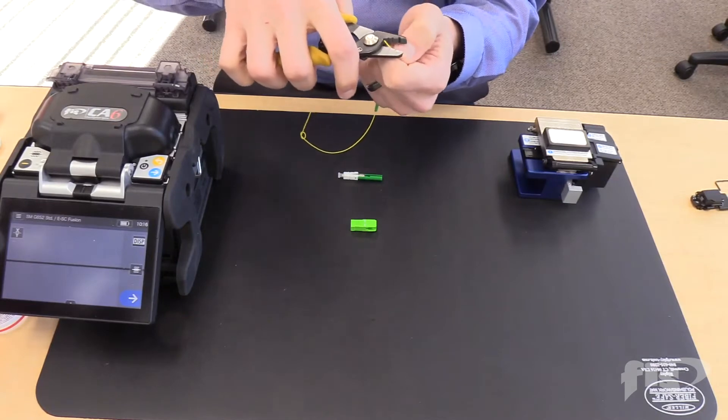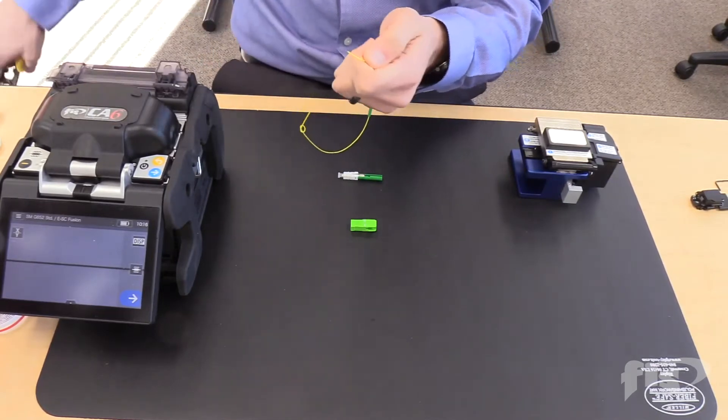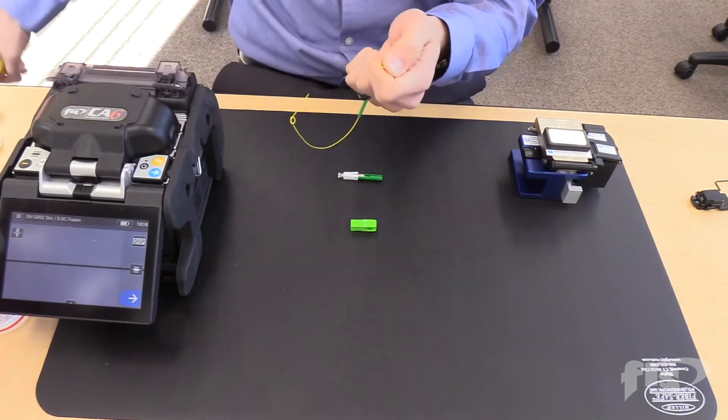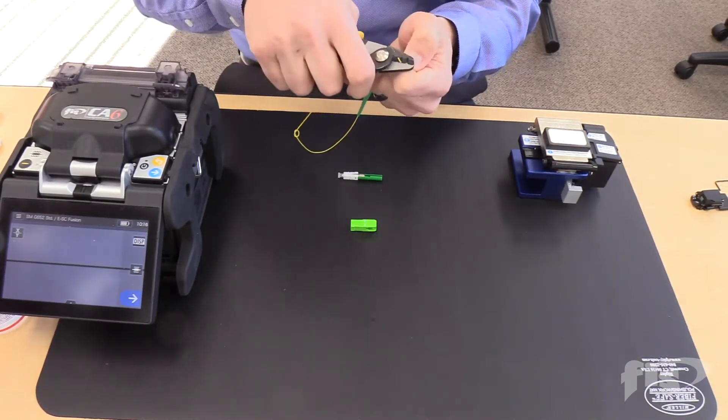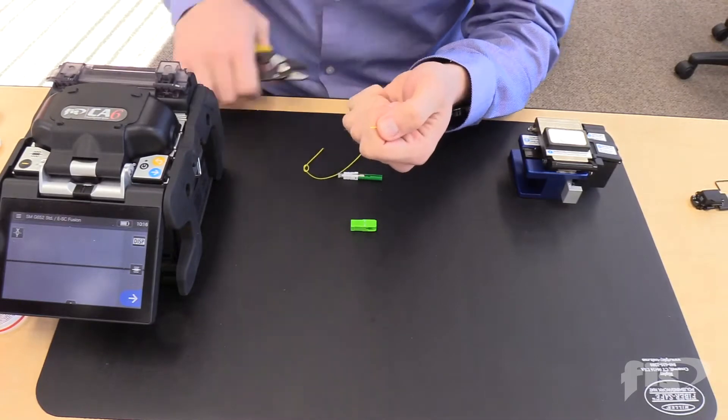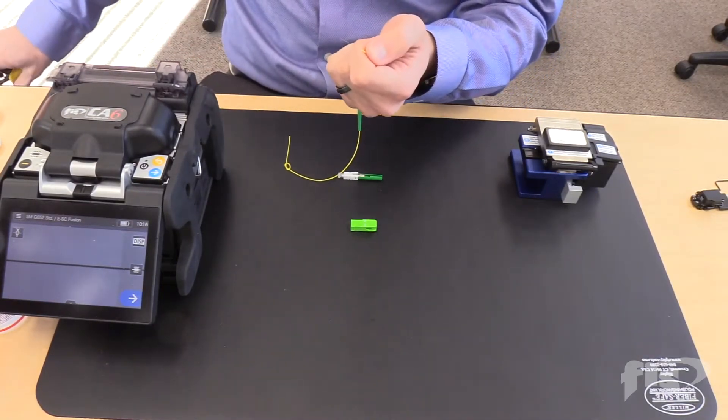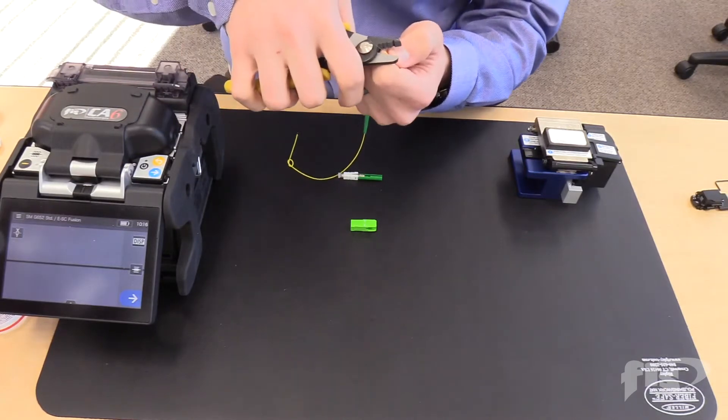Take the tri-hole stripper and strip the 900 micron jacket. Strip a quarter of an inch at a time, so you don't run the risk of breaking the glass. After removing the 900 micron jacket, use the 250 micron slot of the stripper and remove the acrylate coating.